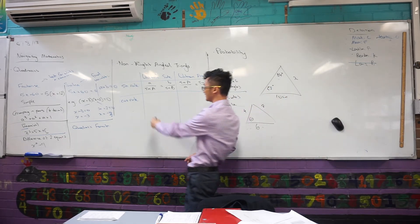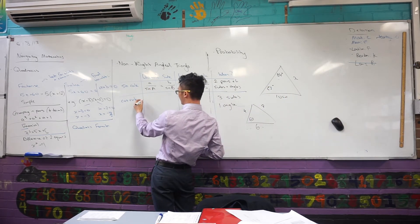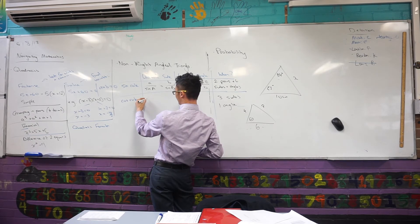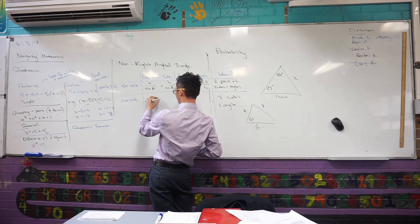Let me just finish off writing these questions here. So cos rule for unknown side... C squared. B squared. Oh. Yes.